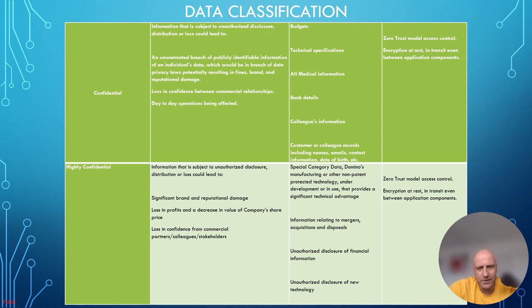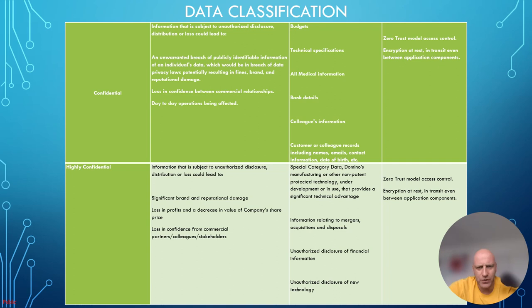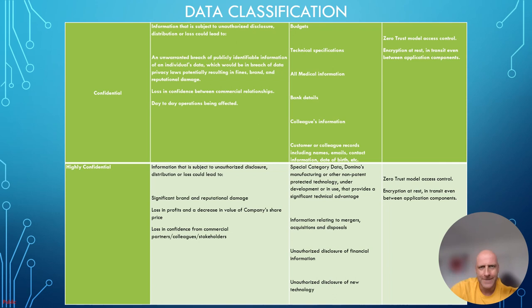The last label is highly confidential — information whose unauthorized disclosure, distribution, or loss could lead to significant brand and reputational damage, loss in profits, decrease in company share price value, and loss of confidence from commercial partners, colleagues, and stakeholders. Examples include special category data, non-patented technology under development, information relating to mergers and acquisitions, and unauthorized disclosure of financial information or new technology. The protection model mirrors confidential data: zero-trust access control and encryption at rest and in transit, including between application components.